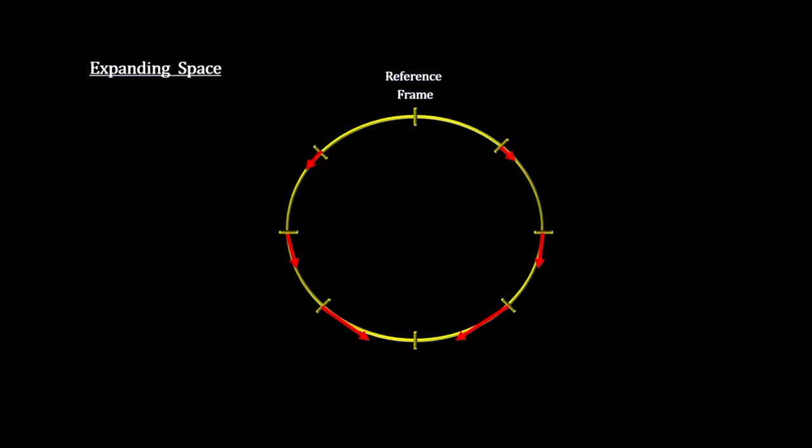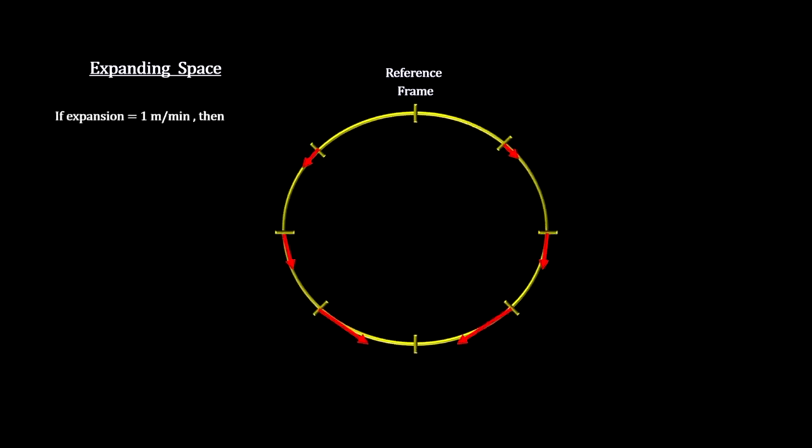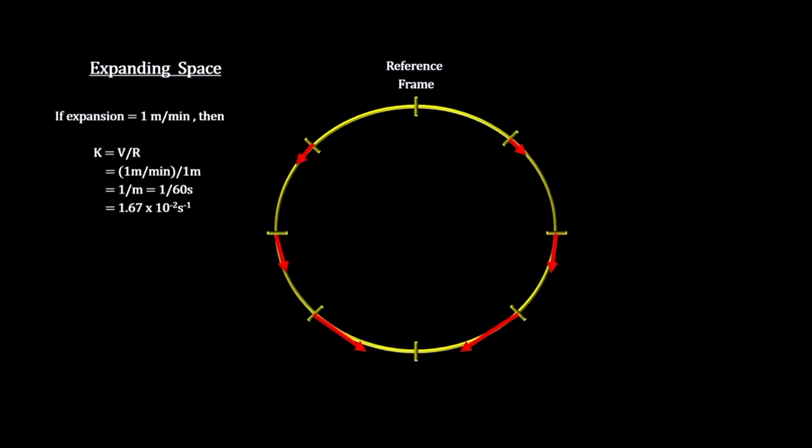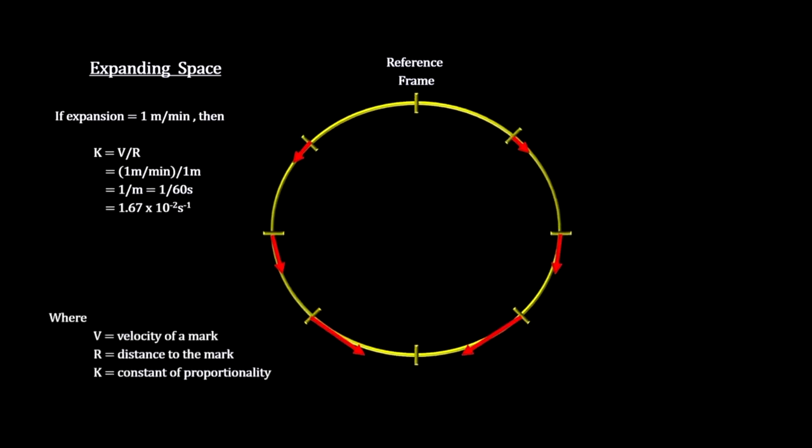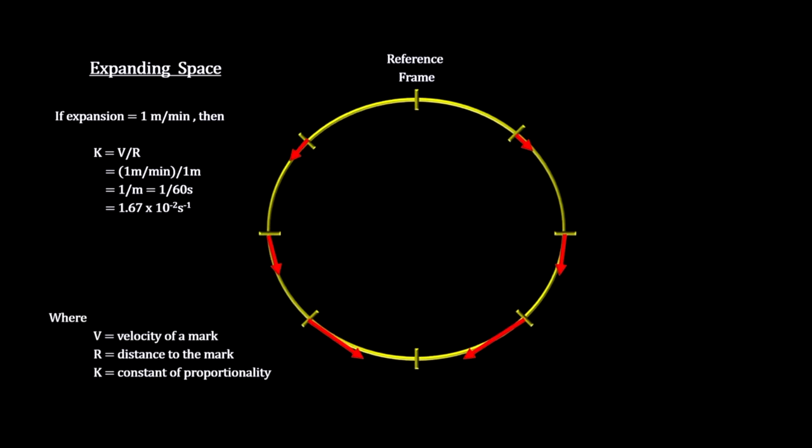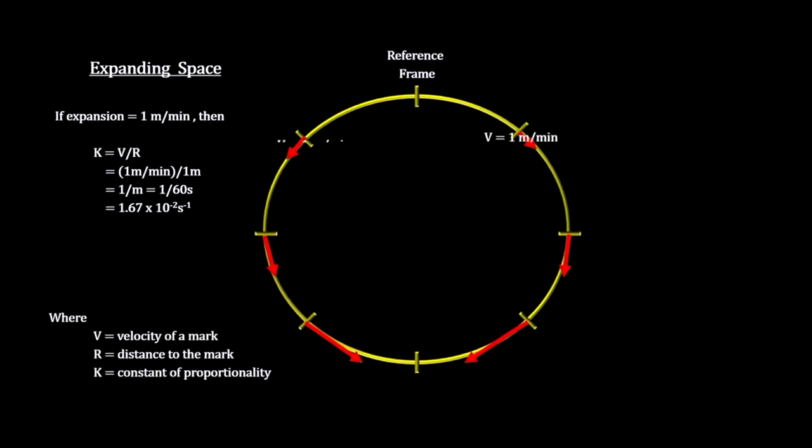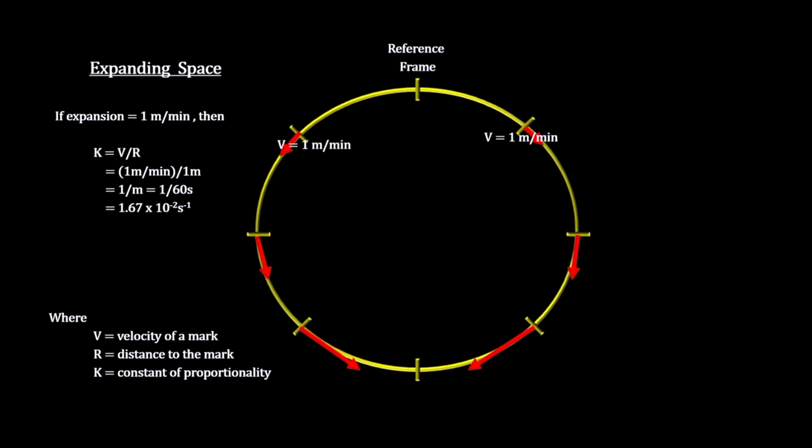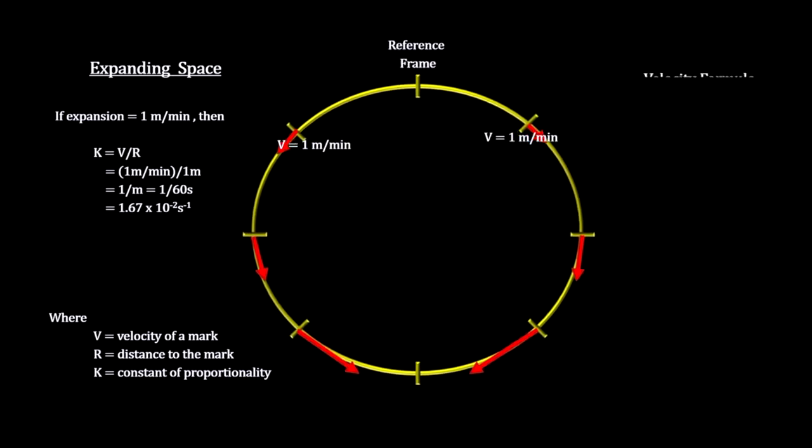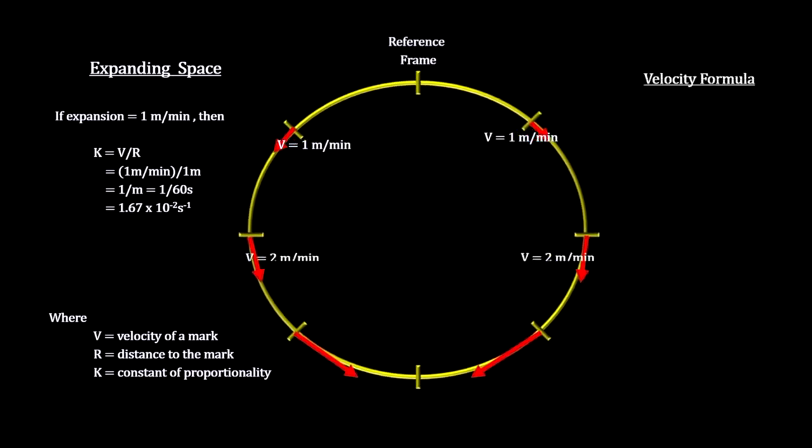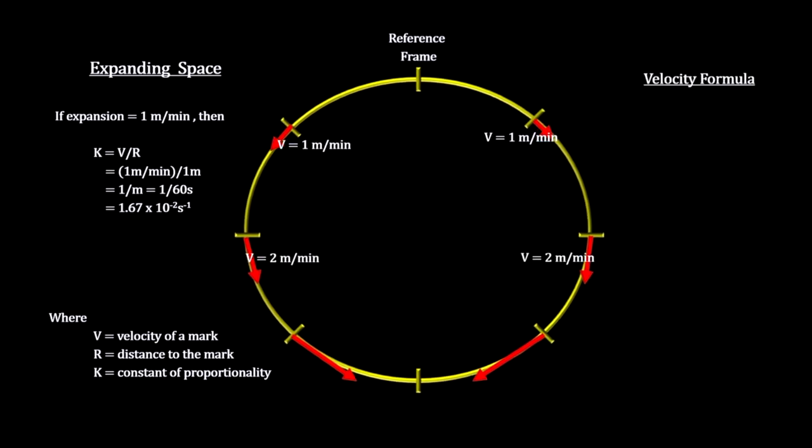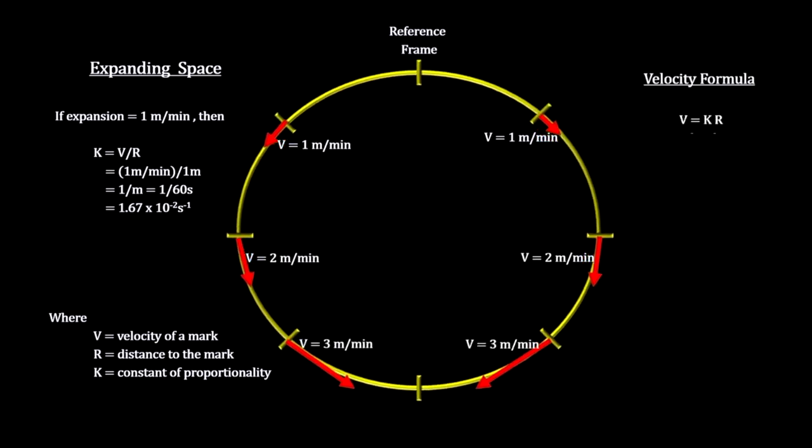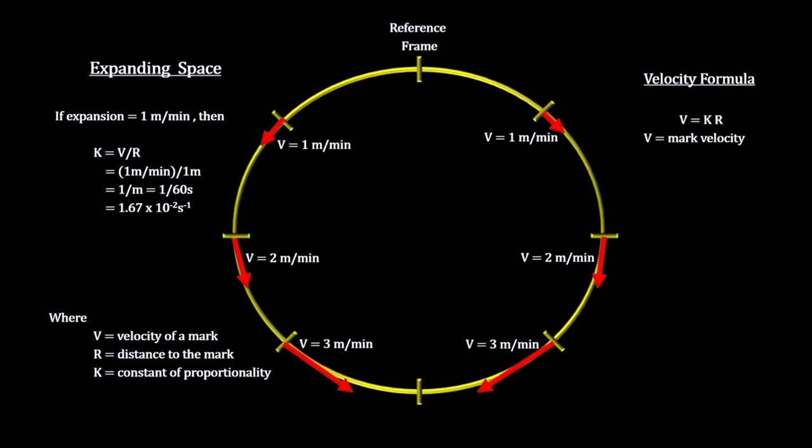Let's say each meter on the line expands to two meters over the course of a minute. We see that the distance between adjacent marks goes up one meter and their apparent velocity, as seen by each other, is one meter per minute. But more distant marks have increased their distance and velocity by more than that. And the further away any two marks are, the more their distance and velocity have increased.